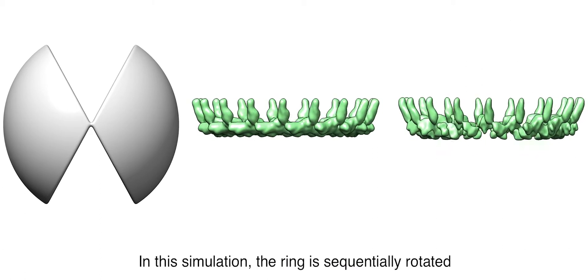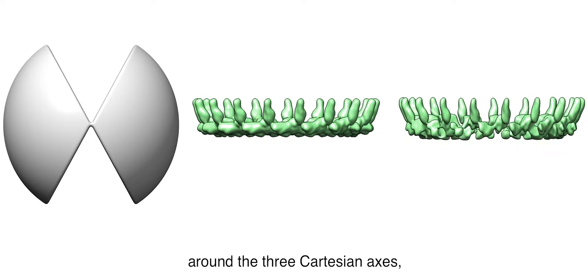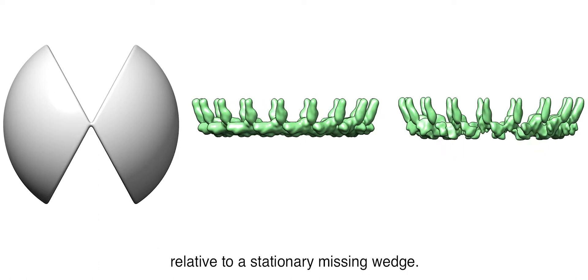In this simulation, the ring is sequentially rotated around the three Cartesian axes, relative to a stationary missing wedge.